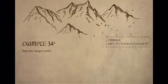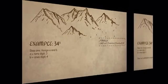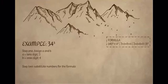Our question, 34 cubed. Our first step is to assign A and B. A is 3 and B is 4. Our next step is to use the formula to substitute the A's and B's for numbers.